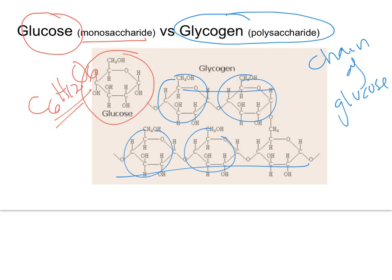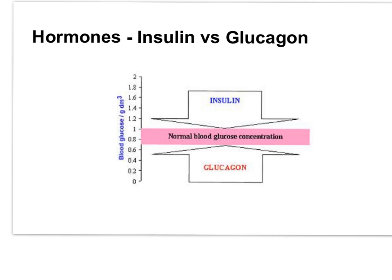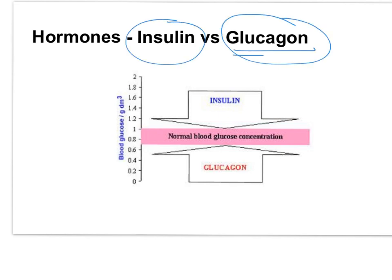Unfortunately, glycogen sounds a lot like the hormone glucagon, so you've got to keep all your G's separated. Glucose is a sugar; glycogen is a starch, a polysaccharide. Don't get those confused with the hormones insulin and glucagon.